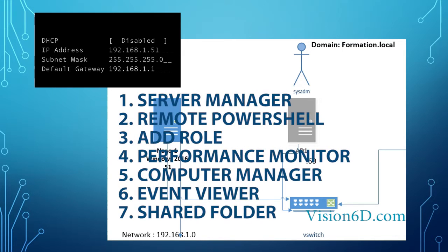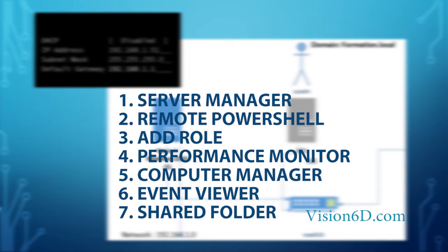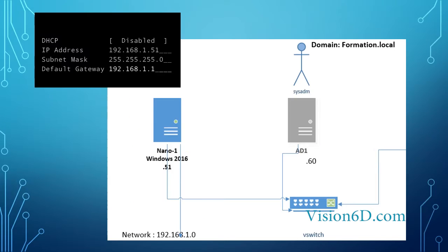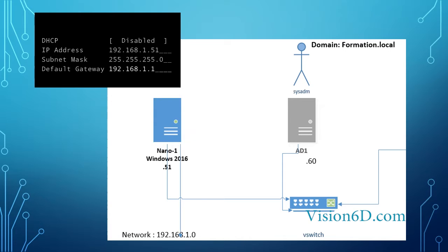Hello and welcome. We are going today to see how to remote manage a Nano Server, specifically by remote management tools using the graphical user interface. I have here nano1, which is the server in blue with its configuration. Its IP address is 192.168.1.51 and its name is nano1. I'm Christian from Vision6D, and the sysadmin of this system. In gray you can see the domain controller, AD1, which is the server I'm going to connect to.